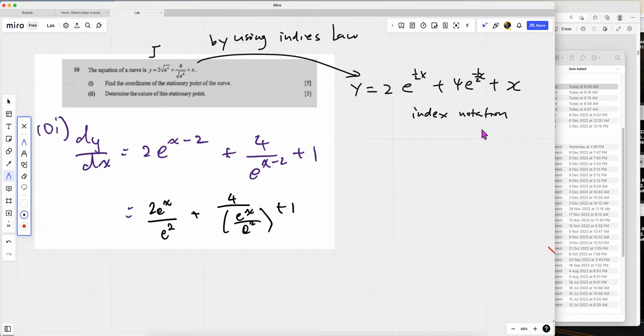So therefore, then you can actually find the coordinate of stationary point. What's the meaning of stationary point? It's the turning point, the maximum. So basically stationary point can be max or min, right?